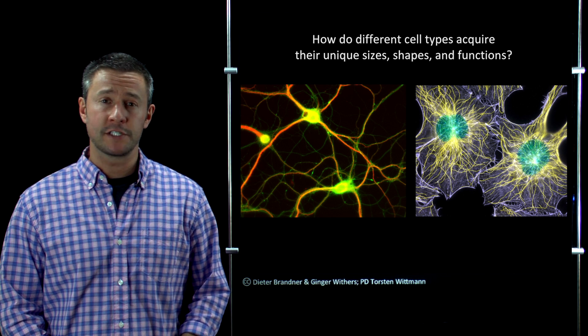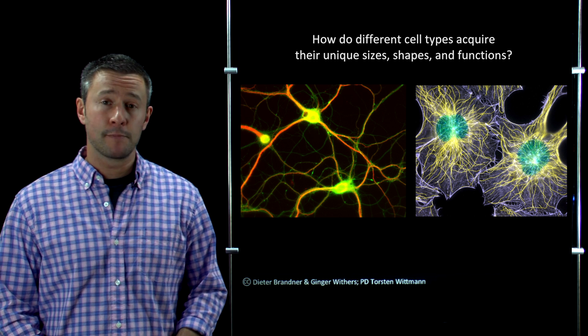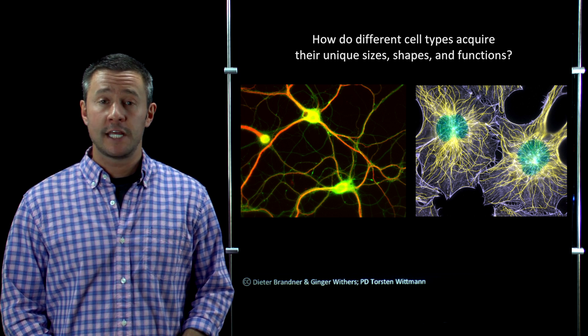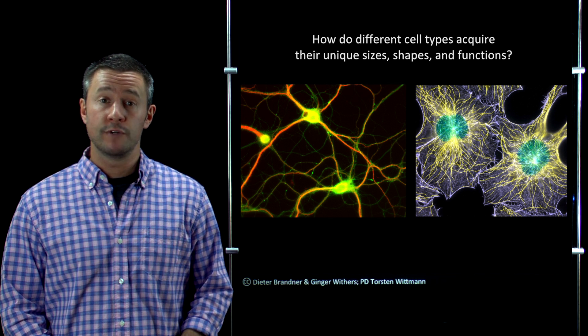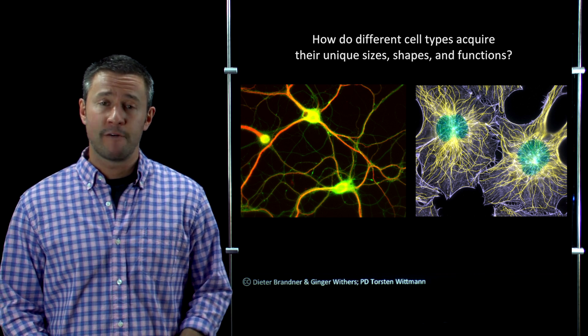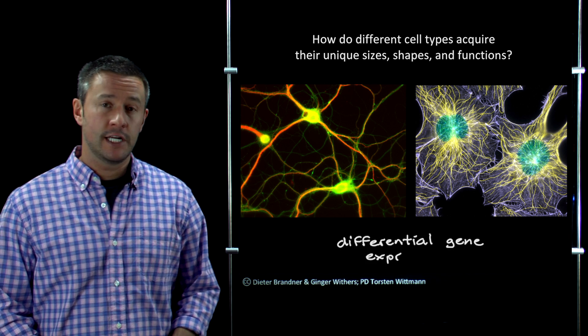Now of course this raises an obvious question. If different cell types, neurons and fibroblasts for example, all contain the same set of genes, then how is it that they acquire their unique sizes and shapes and functions? Well, the answer to that is differential gene expression.